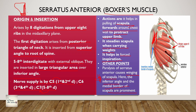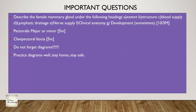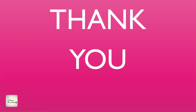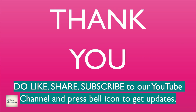The last slide covers important exam questions: describe the female mammary gland under the headings of extent, structure, lymphatic drainage, blood supply, nerve supply, clinical anatomy, and development. Pectoralis major and the clavipectoral fascia are also important topics. In answers, do not forget to draw diagrams - diagrams are very important to support your answer. Stay home, stay safe, do not go out. Thank you - do like, share, and subscribe to our YouTube channel and press the bell icon to get updates. Thank you and have a great day.